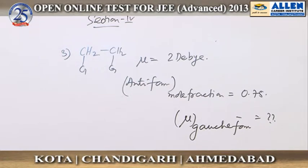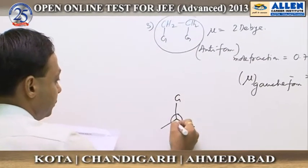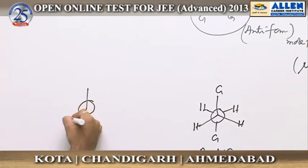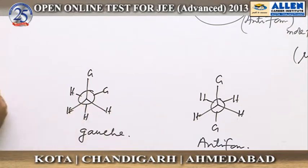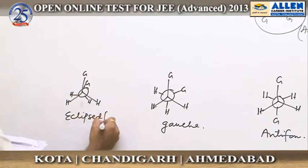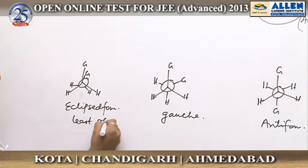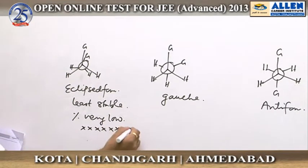First of all, we want to write its gauche form, its anti-form, and other conformations of this compound. We know this is called anti-form, this is called gauche form, and another form is called eclipsed form. We are not concerned about the eclipsed form because it is extremely unstable, least stable, and its percentage is very low, negligible. So whatever its dipole moment, its contribution is nothing.